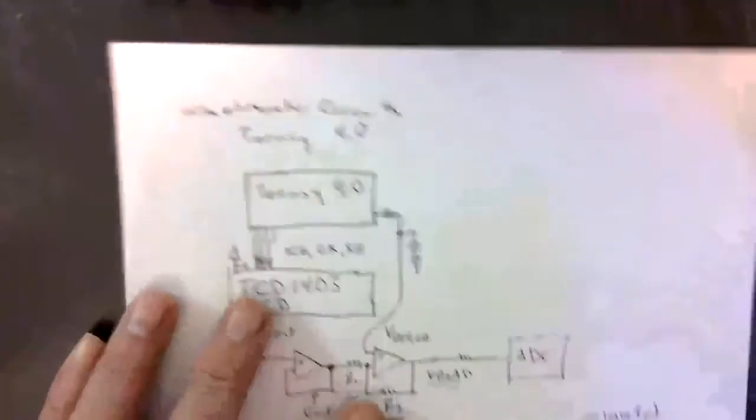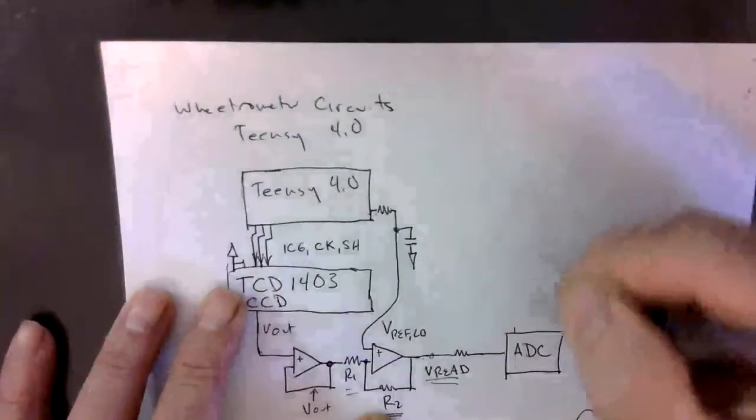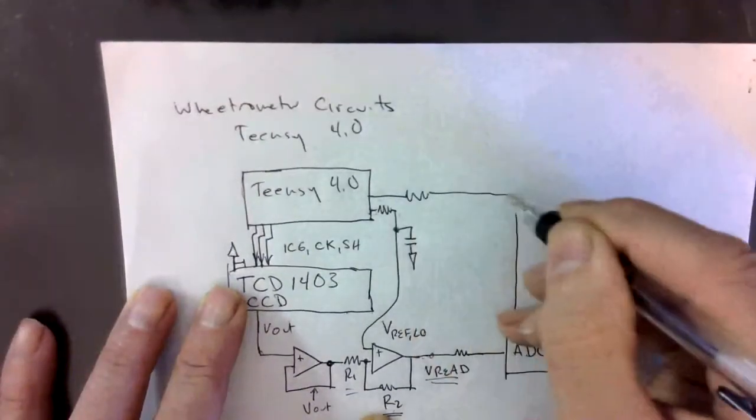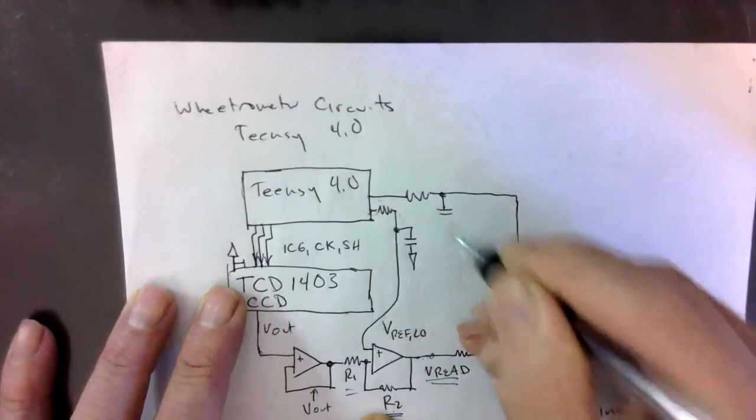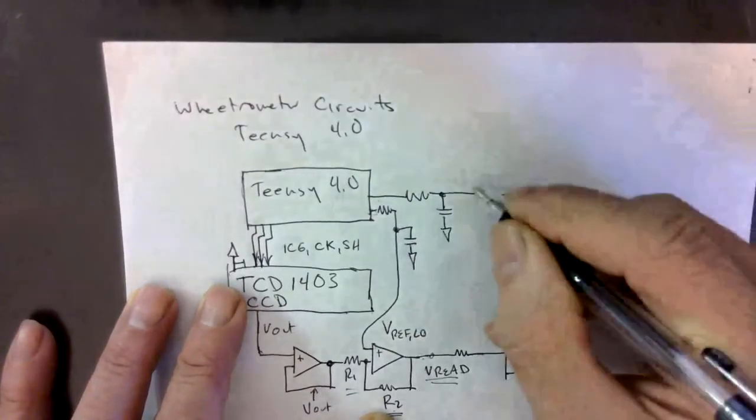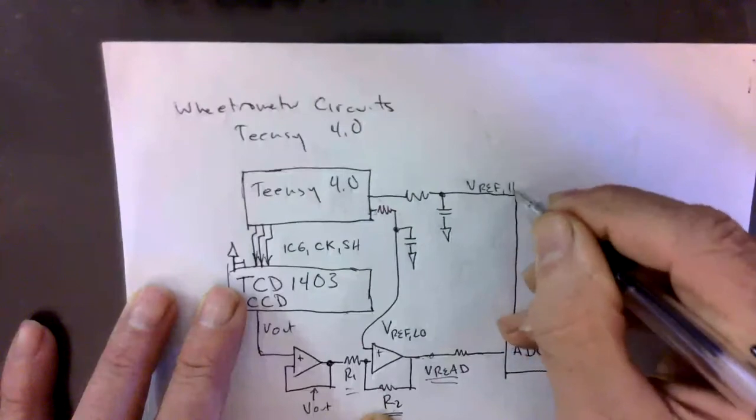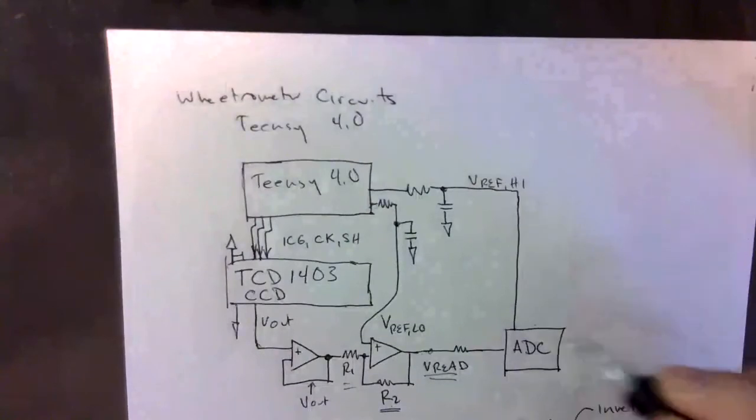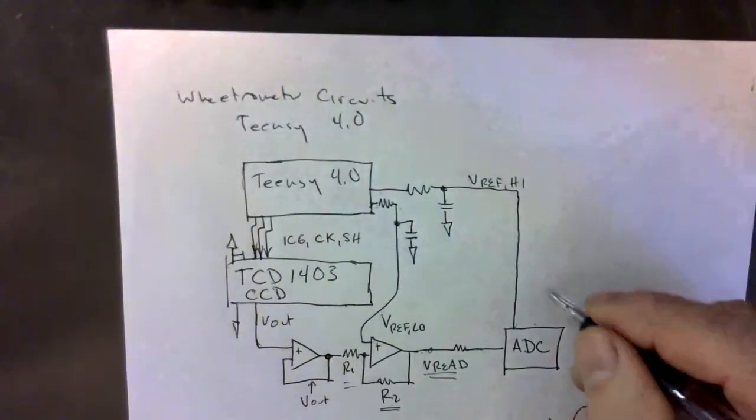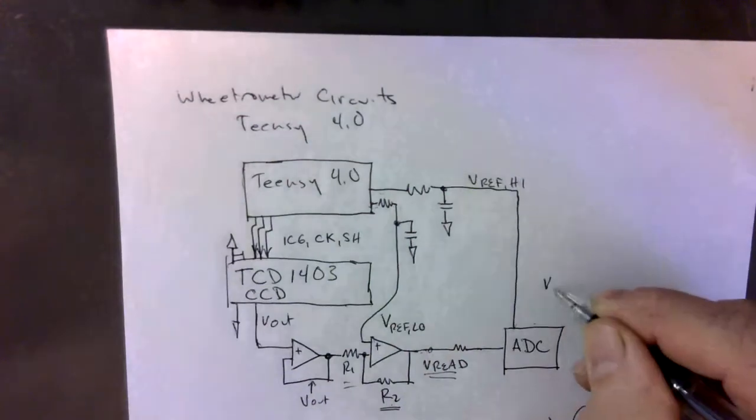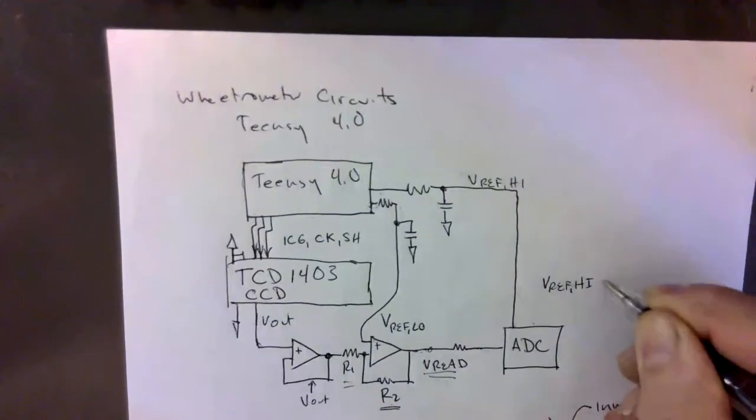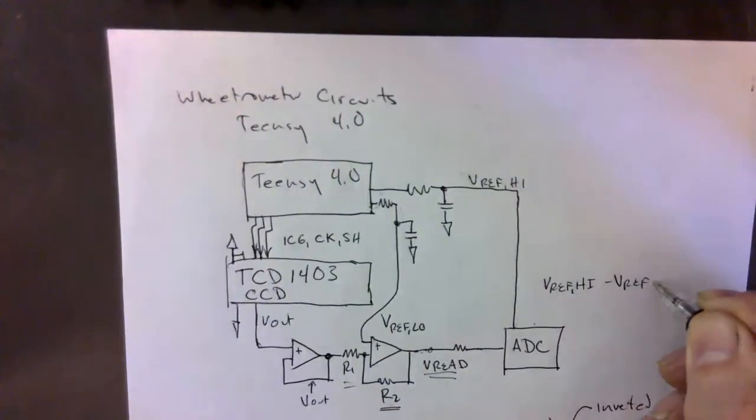Last thing you got to know about this circuit is that we have another voltage that inputs to the ADC. We have another PWM input and this one is V ref high. What the ADC does is it measures V ref high minus V ref low.